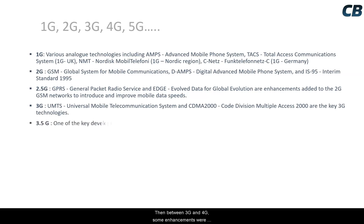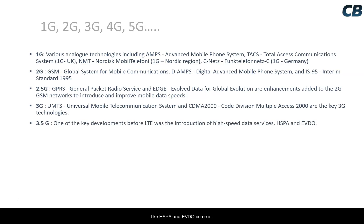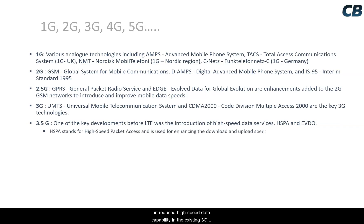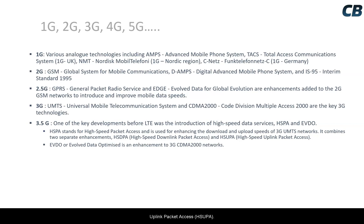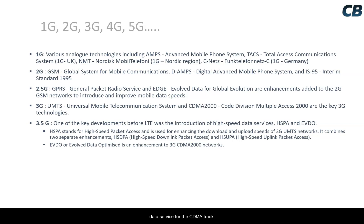Between 3G and 4G, enhancements were made to 3G networks — these technologies, termed 3.5G, introduced high-speed data capability. HSPA (High Speed Packet Access) is a combination of HSDPA (High Speed Downlink Packet Access) and HSUPA (High Speed Uplink Packet Access). HSPA was the high-speed data service for the UMTS network on the GSM track, while EVDO was the high-speed data service for the CDMA track.